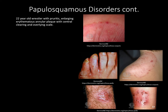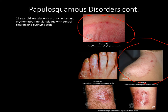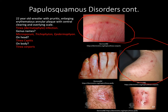A 22-year-old wrestler with a pruritic enlarging erythematous annular plaque with central clearing and overlying scale is tinea — a dermatophyte infection. The three main genus names are Microsporum, Trichophyton, and Epidermophyton. Tinea capitis is on the head, tinea corporis on the body, tinea cruris in the inguinal region, tinea pedis on the foot (most common subtype is the interdigital subtype between the toes), and onychomycosis on the nails.